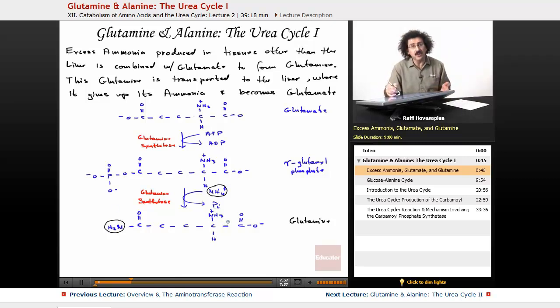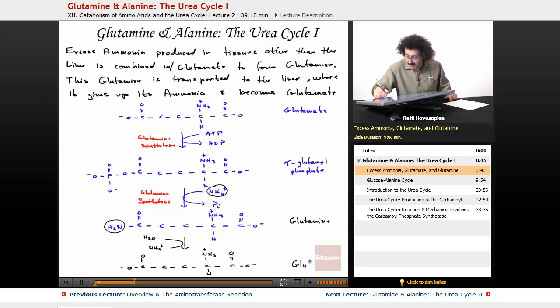The final conversion that takes place that converts glutamine back to glutamate is a basic hydrolysis reaction. What comes in is water and what ends up leaving is NH4 plus, this thing right here, and what you get is your glutamate back. We have the carboxyl, the amino group, and then the other carboxylate. So now we are back at glutamate. This is the conversion of glutamine to release the ammonia group at the end that's tied up as an amide group to become glutamate.